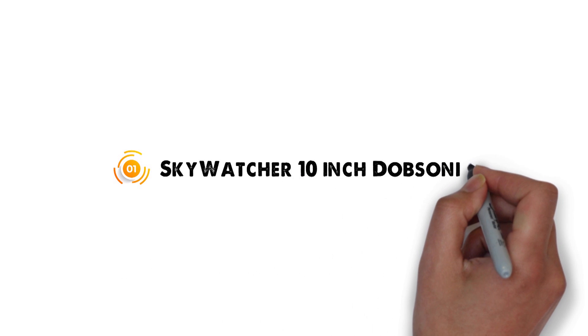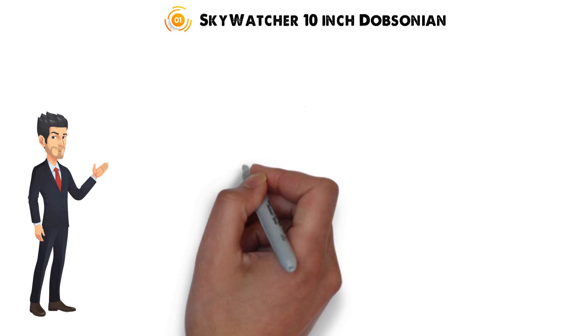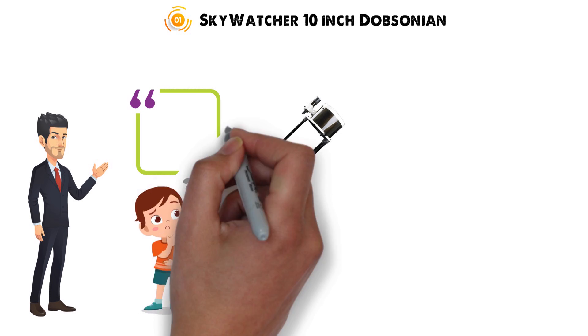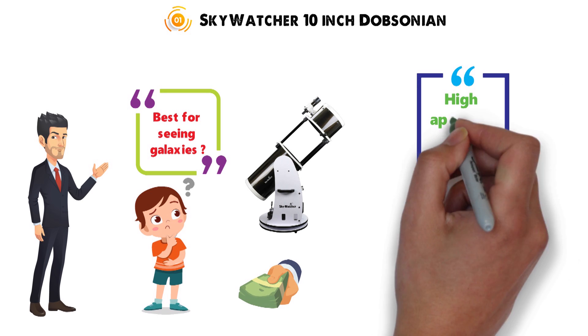Starting off at number 1 we have the Skywatcher 10-inch Dobsonian. The first telescope that I'm going to talk about is the Skywatcher Dobsonian. If you ask the majority of astronomers what's the best for seeing galaxies and you're not willing to shell out thousands, then they'll say the same thing: get a high-aperture dob.